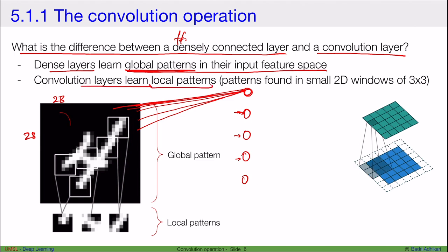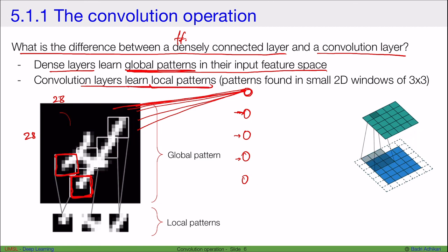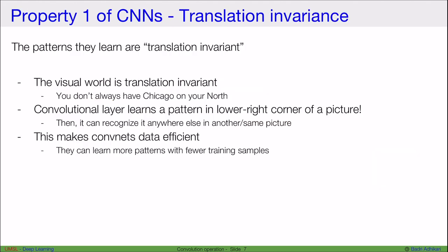Convolutional layers, on the other hand, learn local patterns. Say we have a convolutional filter of size 5 by 5 — it can only look at that size window at a time. Because a convolutional neuron cannot look at the entire image but only a piece of it, they can only learn local patterns found in small 2D windows, usually of size 3 by 3 or 5 by 5.